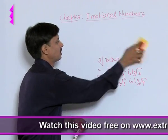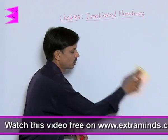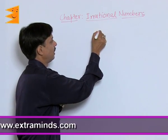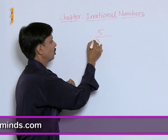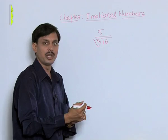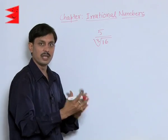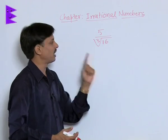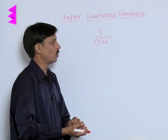I am taking one more example where I will ask you to rationalize the denominator. Suppose I want to say that is 5 upon cube root of 16. Bring it in the simplest form. Simplest form means there should be no irrational number in its denominator.